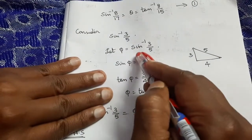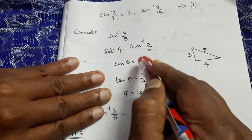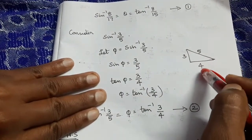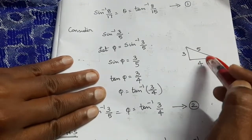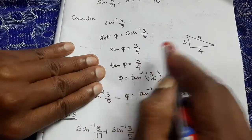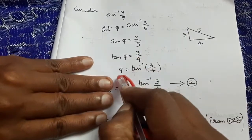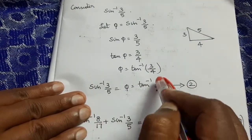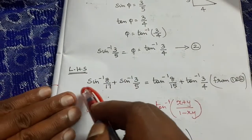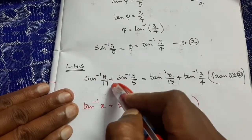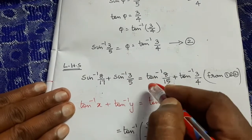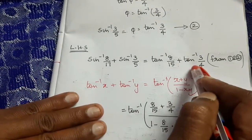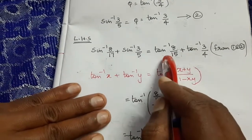Let φ = sin⁻¹(3/5), so sin φ = 3/5. In a right-hand triangle, hypotenuse = 5, opposite = 3. Adjacent = √(5² − 3²) = 4. So tan φ = 3/4, giving φ = tan⁻¹(3/4). Therefore sin⁻¹(3/5) = tan⁻¹(3/4).